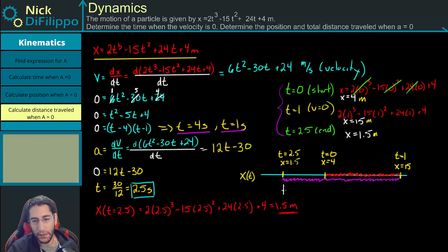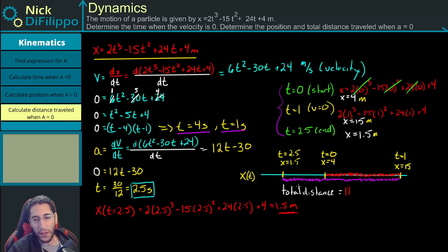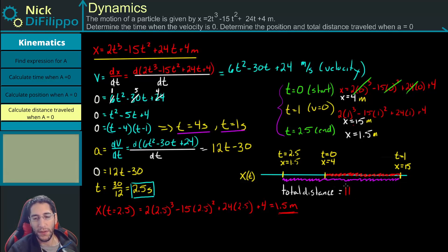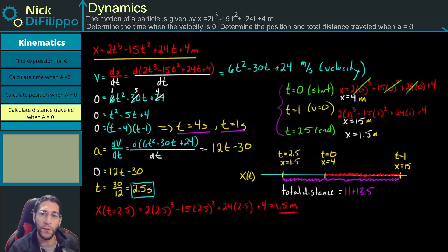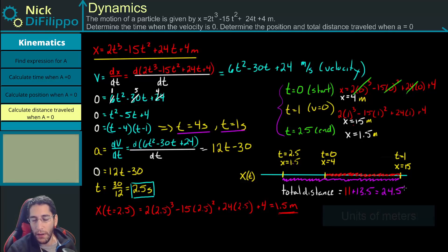The total distance traveled is the sum of both segments. The first segment is 15 - 4 = 11 meters. The second segment is 15 - 1.5 = 13.5 meters. We take the absolute value since distance is always positive. So total distance = 11 + 13.5 = 24.5 meters.